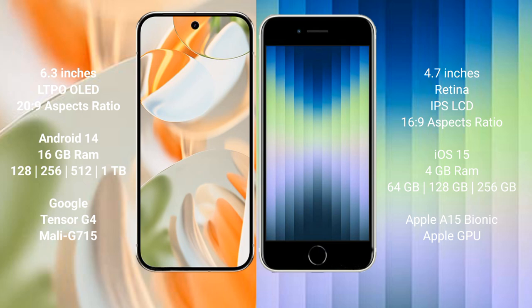The Google Pixel 9 Pro comes with 16GB RAM and 128GB, 256GB, 512GB, or 1TB internal storage options, powered by the Google Tensor G4 processor with Mali G715 GPU. The iPhone XC comes with 4GB RAM and 64GB, 128GB, or 256GB internal storage.